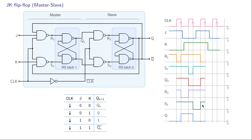In the next clock-high interval, R2 and S2 are one so Q does not change. R1 is the NAND of J and Q-bar; Q-bar is one and J is also one, so R1 equals zero. S1 is the NAND of K and Q; K is one and Q is zero, so S1 equals one. With S1 equal to one and R1 equal to zero, Q1 changes to one.